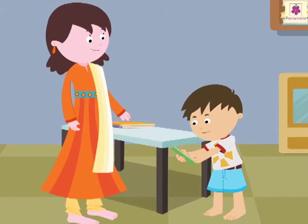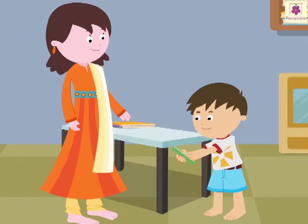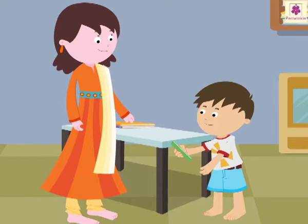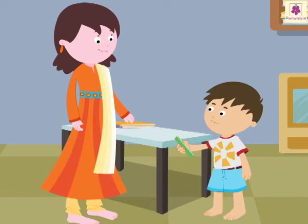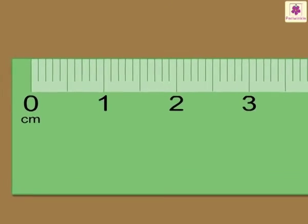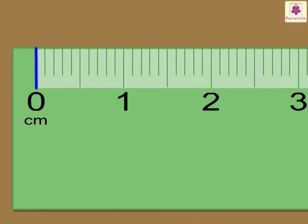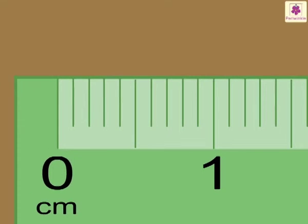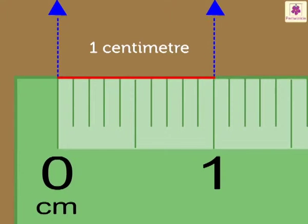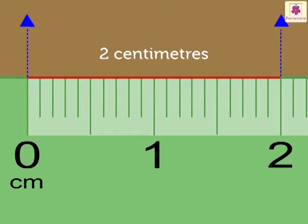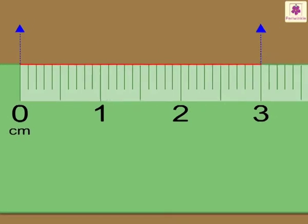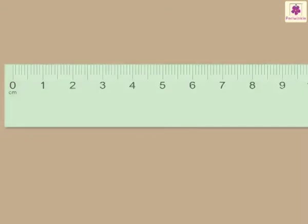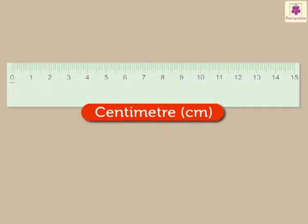So these show the centimeters. But how do we measure the length with this? Let me explain. We measure the length from the zero mark by counting numbers from 0 to 15. We read the length as 1 centimeter, 2 centimeters, 3 centimeters and so on. To write centimeter, we use its short form, that is CM.